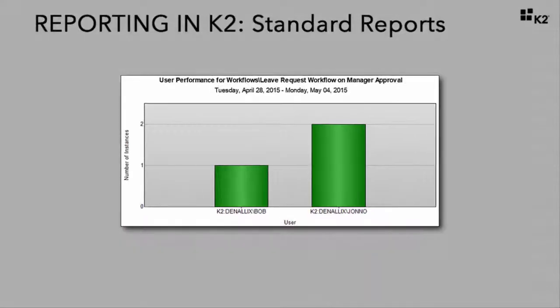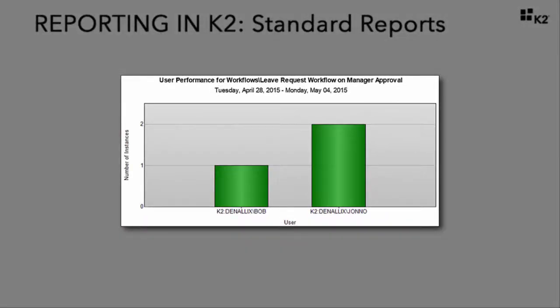The user performance report shows the average duration or number of tasks completed for all users that performed a specific user task in a process. This is useful in team management scenarios — for example, identifying which users in a department do the most work — or in user performance management, for example, understanding how long a particular user takes on average to complete a specific task. Here we are looking at the number of manager approval tasks each user completed for the leave request workflow process over a week's time.